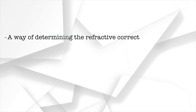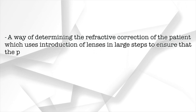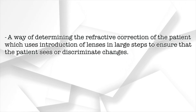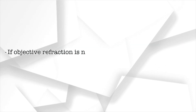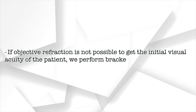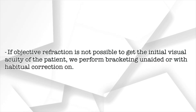A way of determining the refractive correction of the patient which uses introduction of lenses in large steps to ensure that the patient sees or discriminates changes. If objective refraction is not possible to get the initial visual acuity of the patient, we perform bracketing unaided or with habitual correction on.